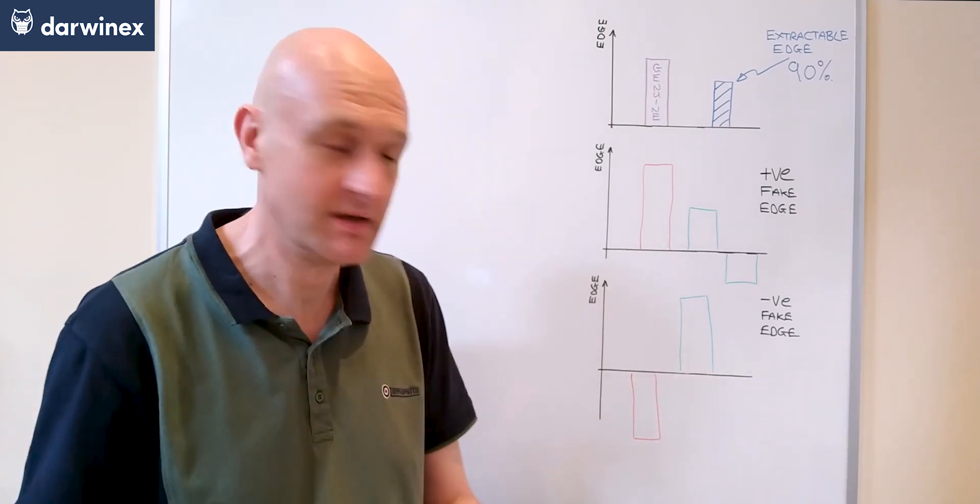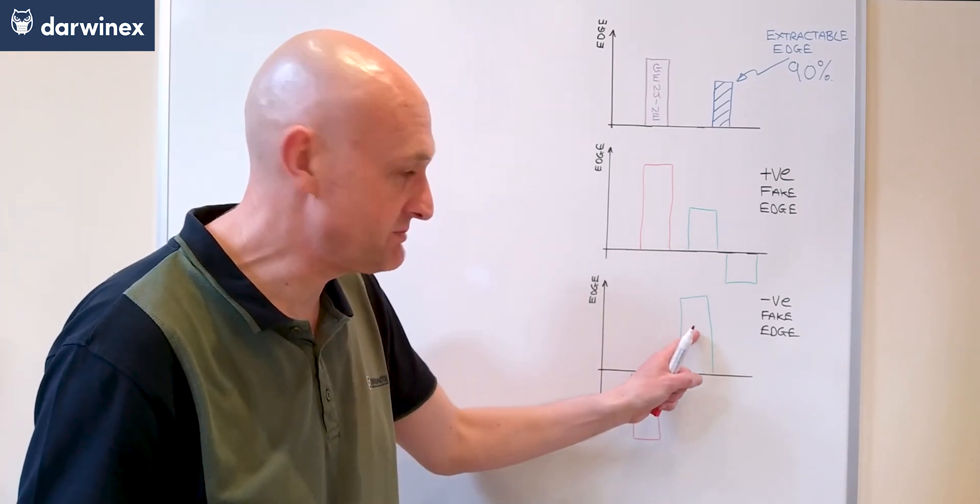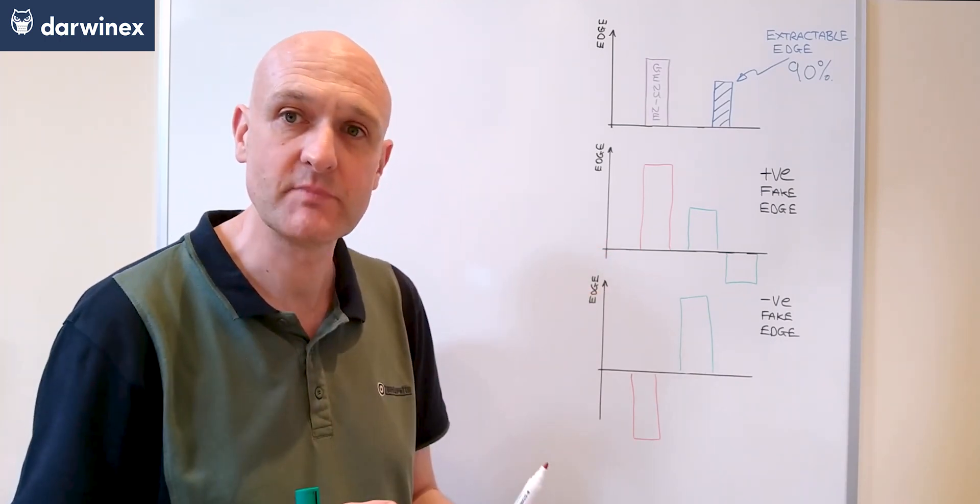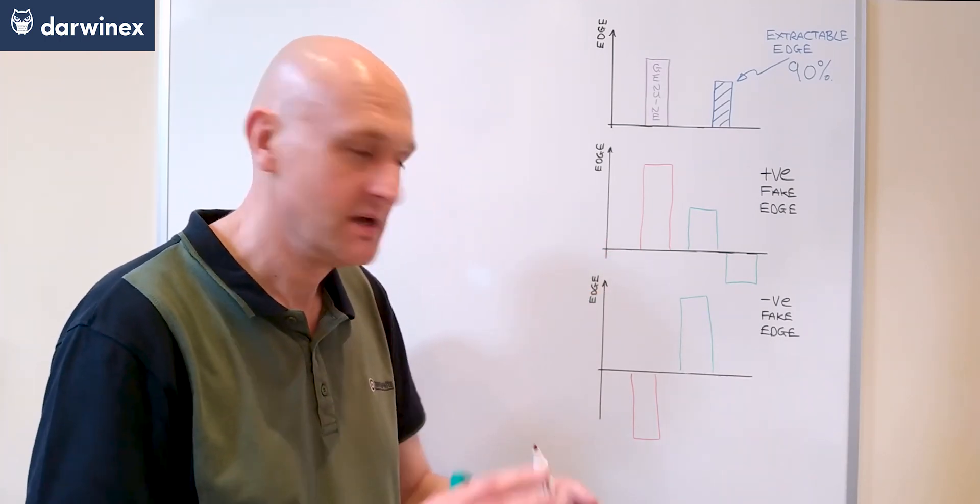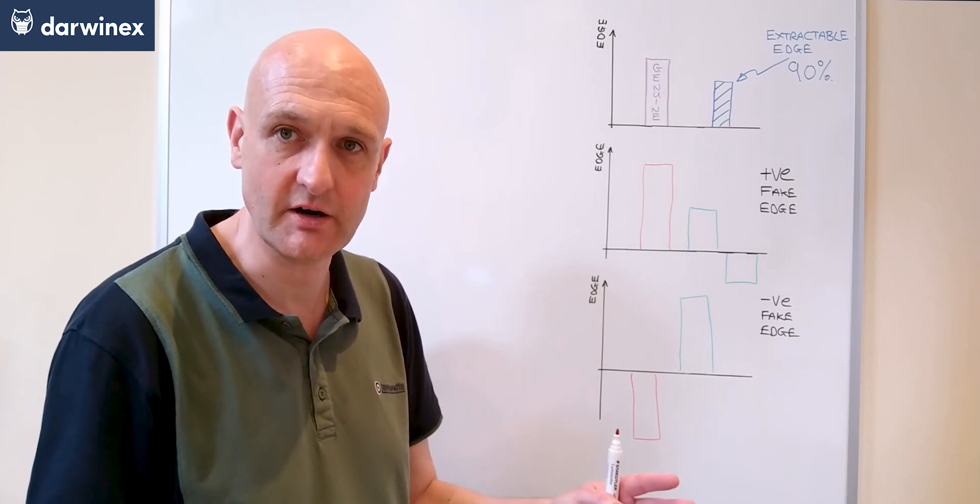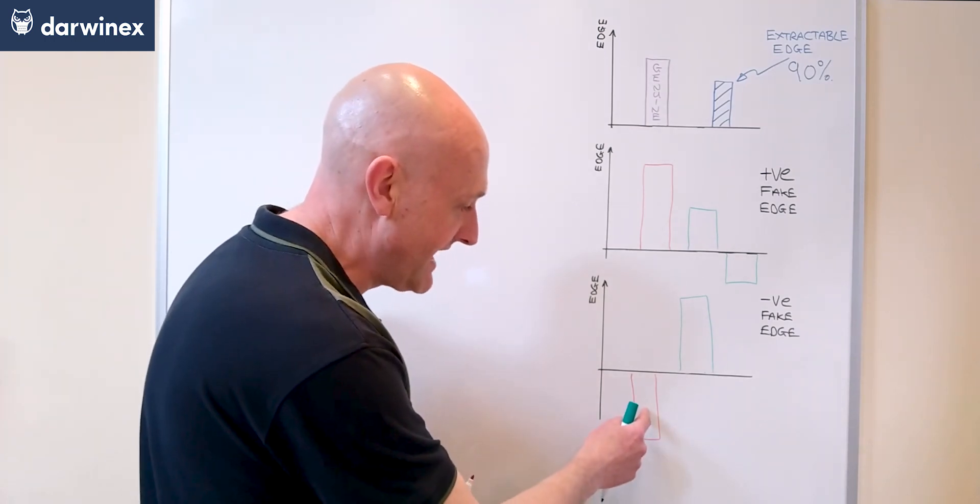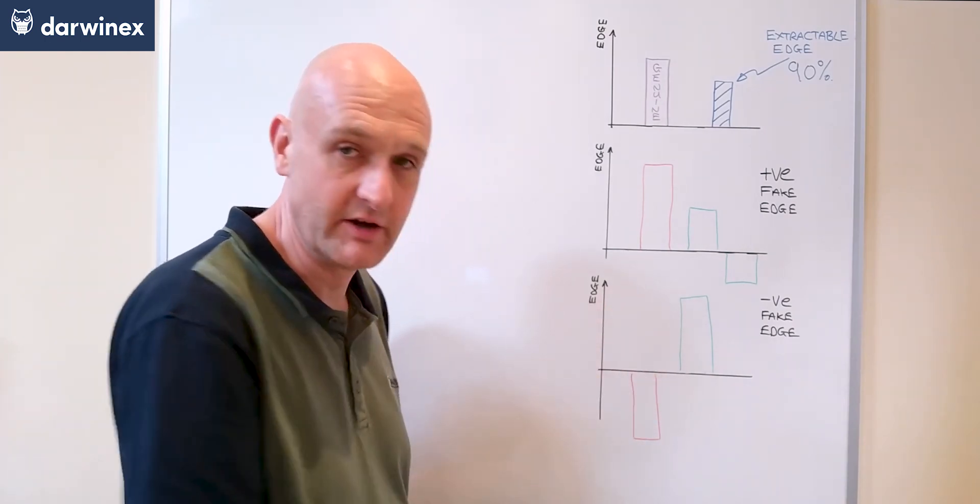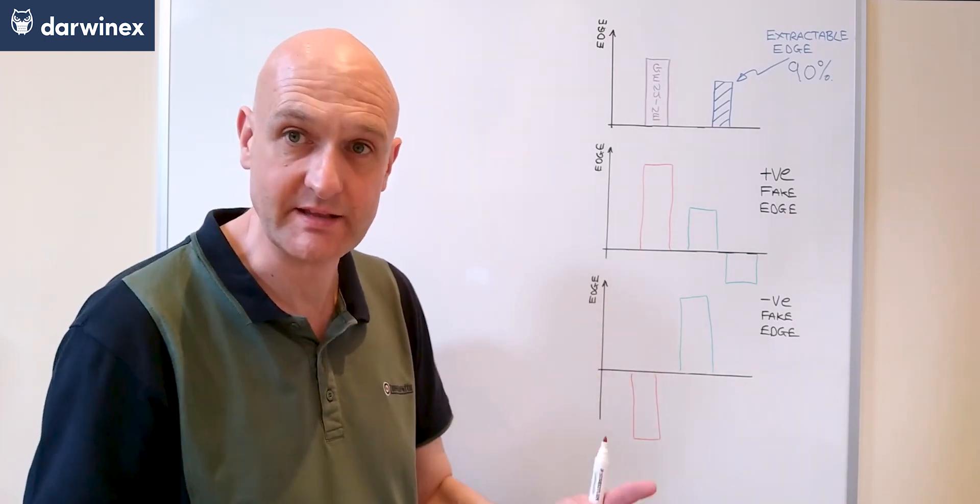So what does this mean? Well it means that these parameters that we would have liked to have ranked highly in the optimization get completely disregarded because the fake edge as a result of overfitting ranked those parameters very low in the optimization.